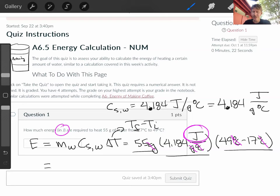So I get 55 times 4.184 times... I should have done this first. Let's start over. So 49 minus 17, then hit the equal sign, and I get 32.